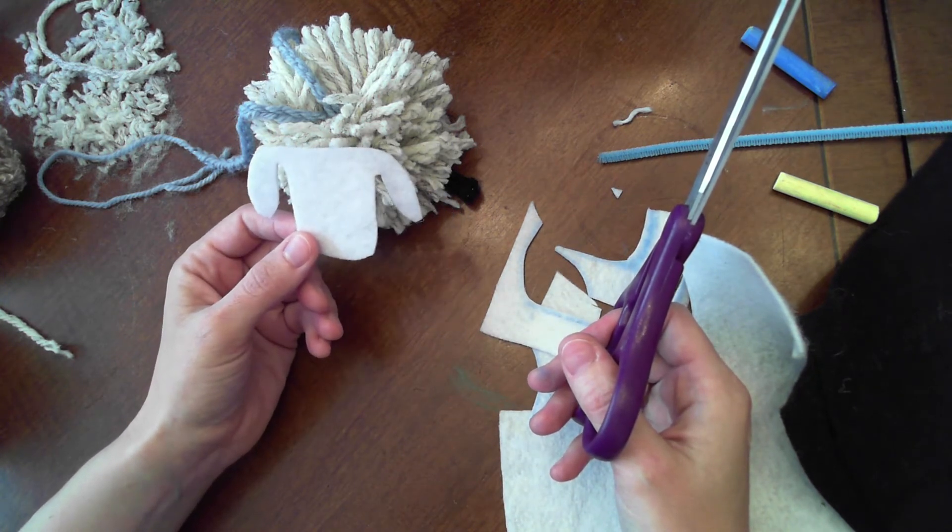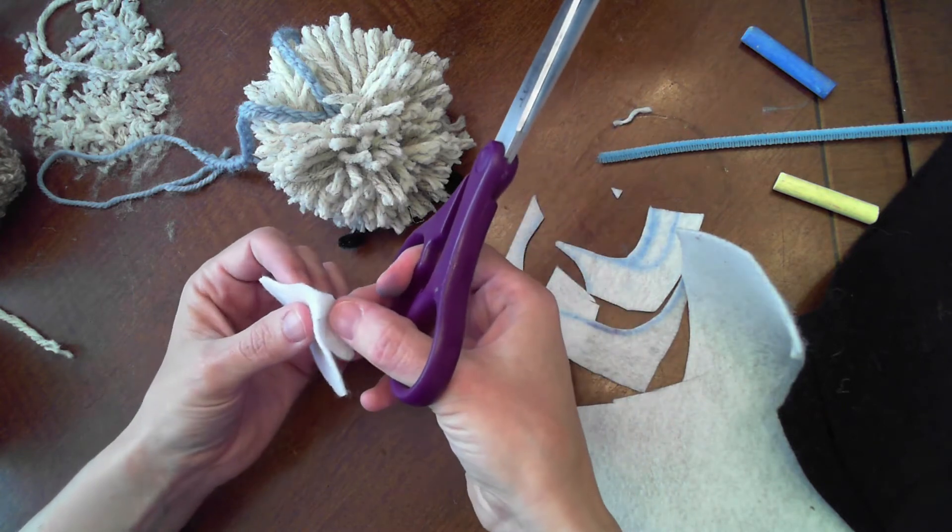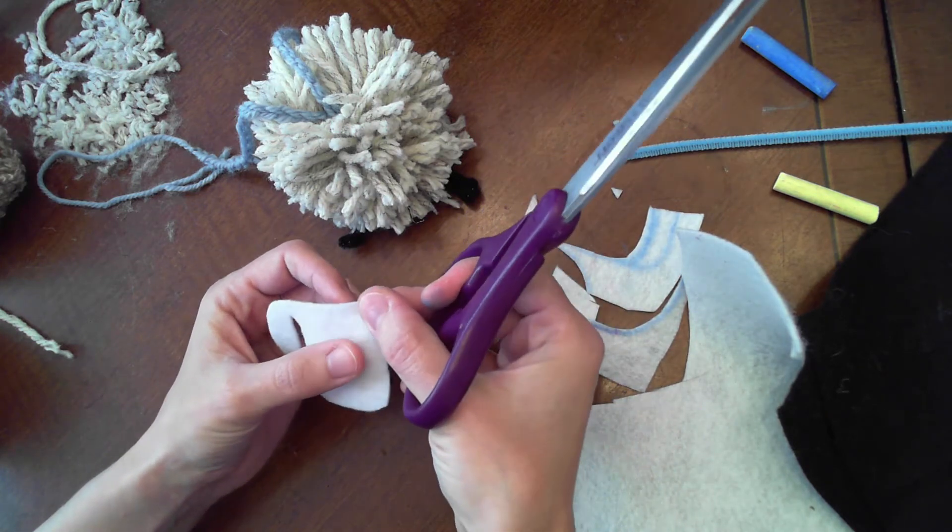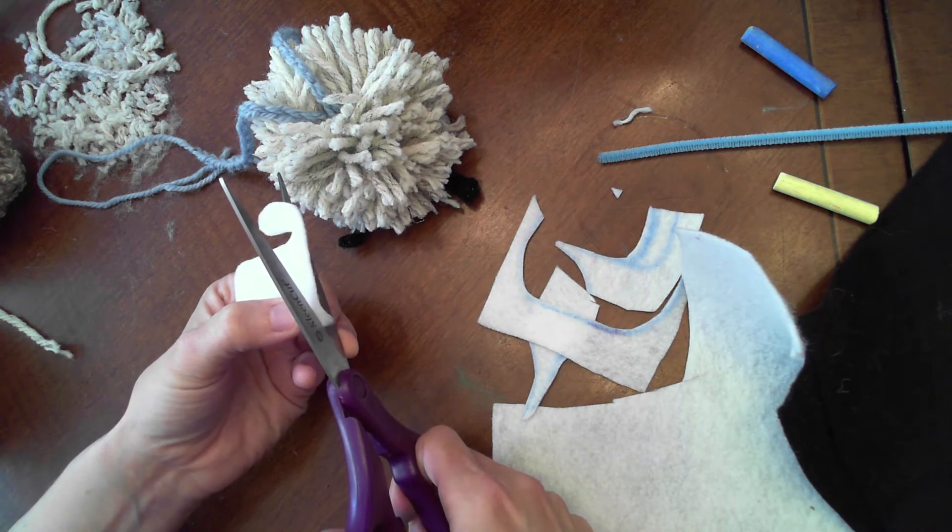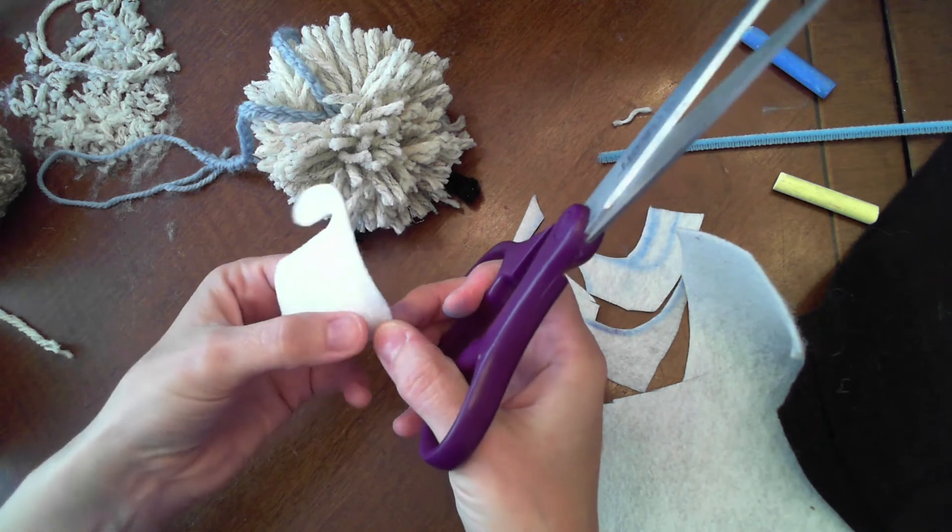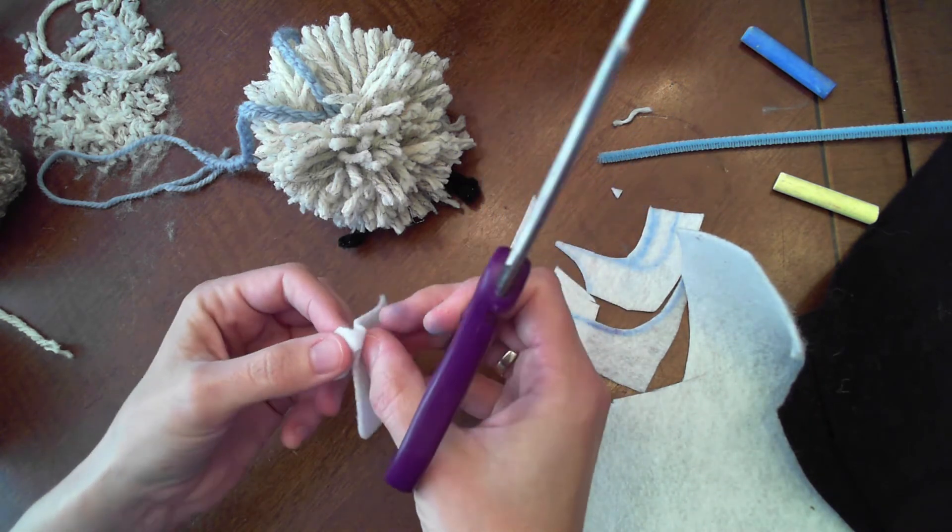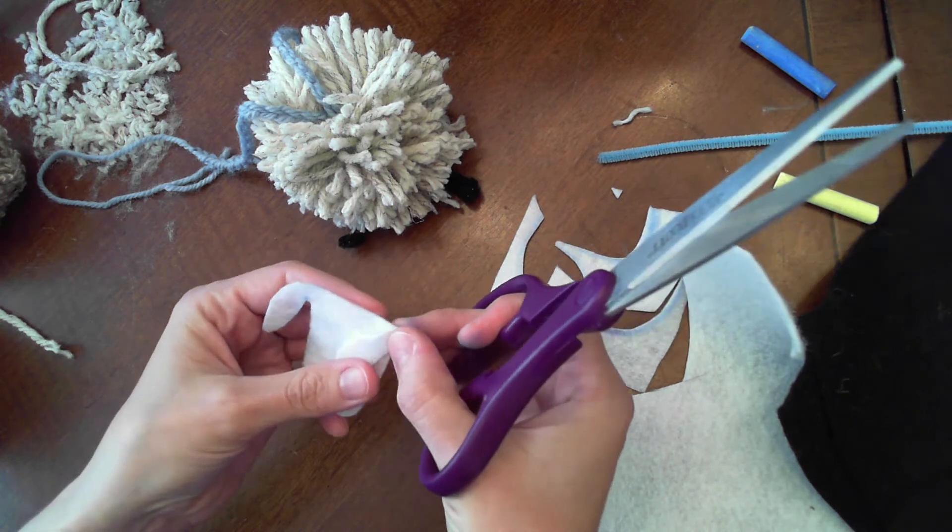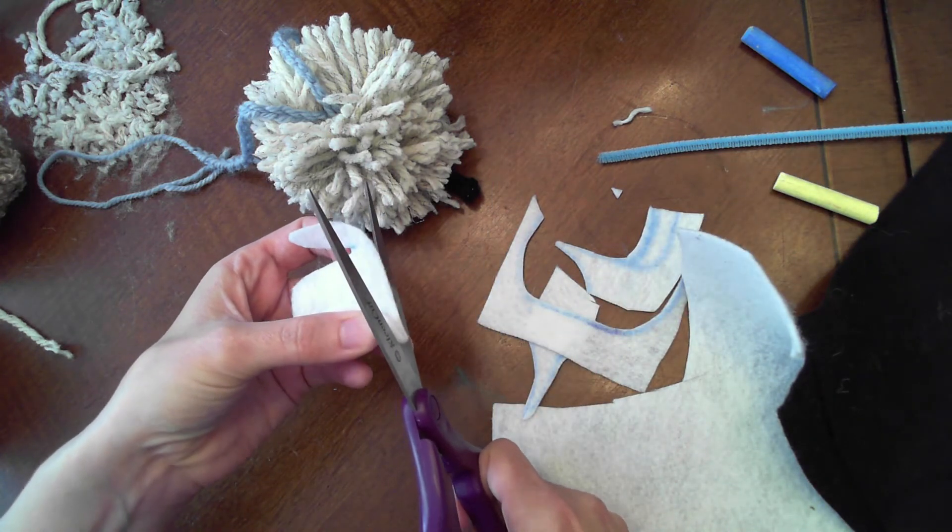For either the girl or the boy ram I am going to fold the face at the ear and I'm going to make the smallest slit possible right there. That is where my pipe cleaner is going to come out. It does not need to be very big at all. And again I'm going to fold that ear over make the tiniest slit. There you go.